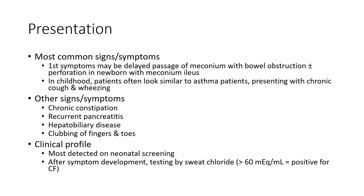Most common signs and symptoms: the first symptom may be delayed passage of meconium with bowel obstruction plus minor presentation in newborns with meconium ileus. In childhood, patients often look similar to asthma patients, presenting with chronic cough and wheezing. Other signs and symptoms include chronic constipation, recurrent pancreatitis, hepatobiliary disease, and clubbing of fingers and toes.